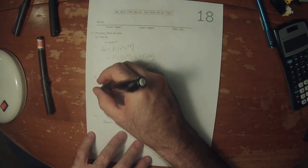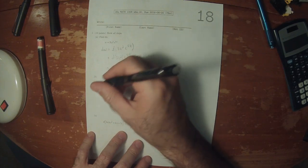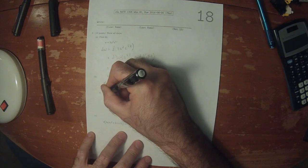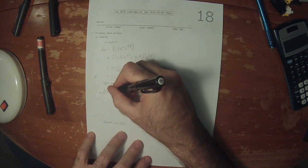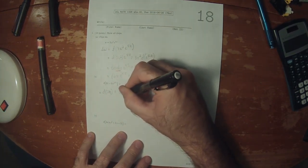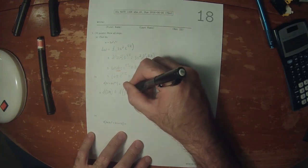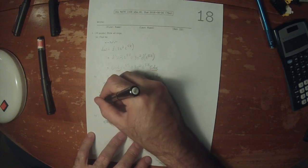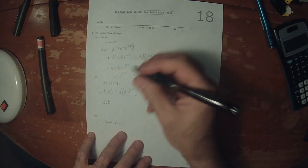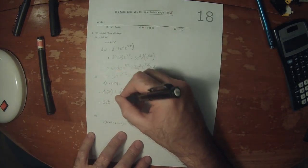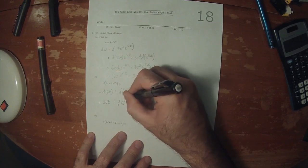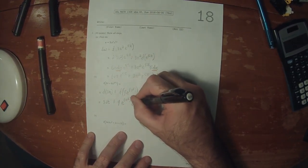For the next one, this would be differential of 3t plus differential of 9e to t squared. So that would be 3dt plus 9 exponential t squared times the differential of t squared.